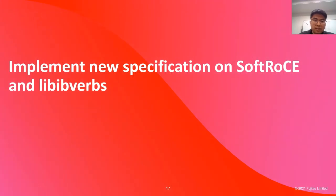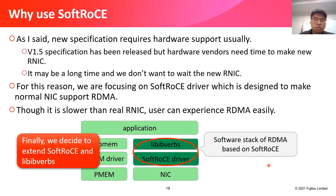The next topic is how to implement the new specification on soft RoCE and libibverbs. Why use soft RoCE? As I said, the new specification requires hardware support. V1.5 specification has been released, but hardware vendors need time to build new RNICs. It may be a long time, and we don't want to wait. For this reason, we are focusing on the soft RoCE driver, which is designed to make a normal NIC support RDMA. Though it is slower than a real RNIC, users can experience RDMA easily. We decided to extend soft RoCE and libibverbs.